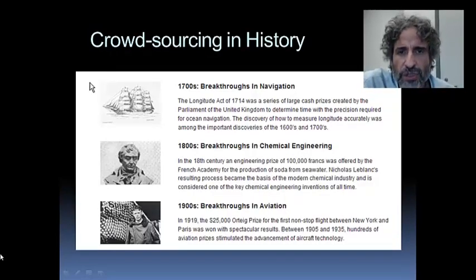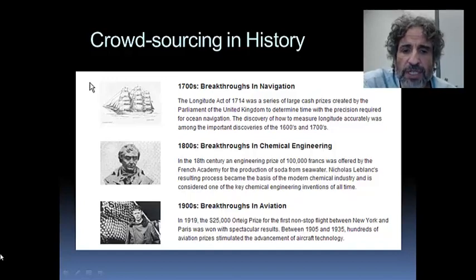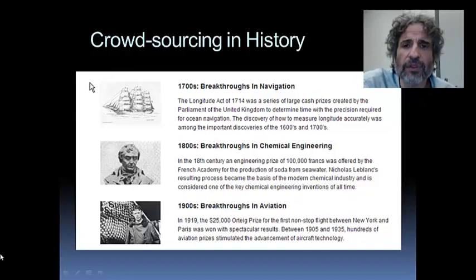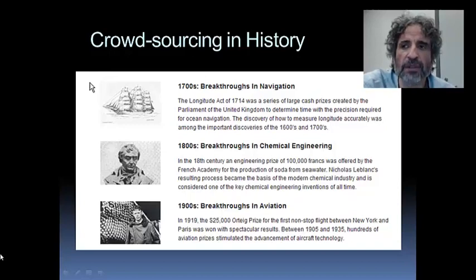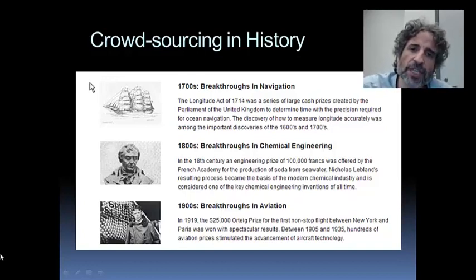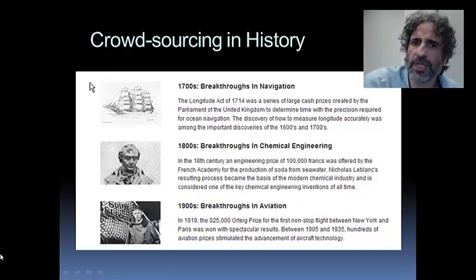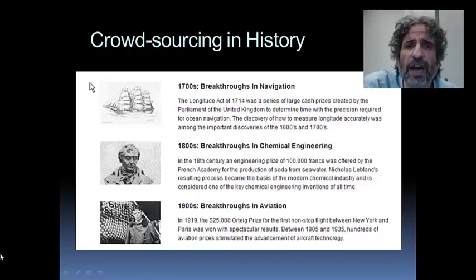Crowdsourcing is not new. There have been interesting examples in which an organization, such as the British Crown, put a problem to the community. The longitude prize dealt with how to find where you are east to west when at sea. The British Crown needed a reliable way to determine the latitude of a vessel. This challenge elicited the interest of many people, not only because it was important, but because there was a lot of money involved — in today's value, about $5 million.